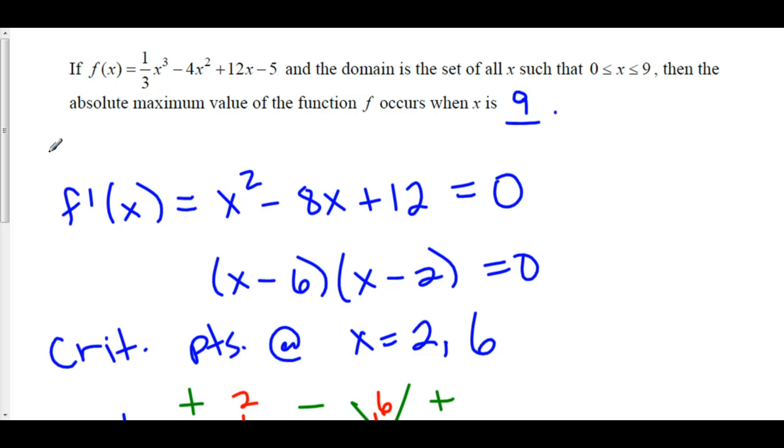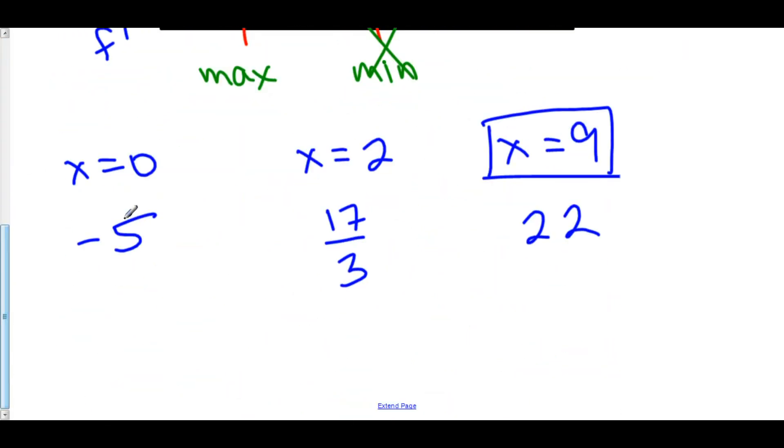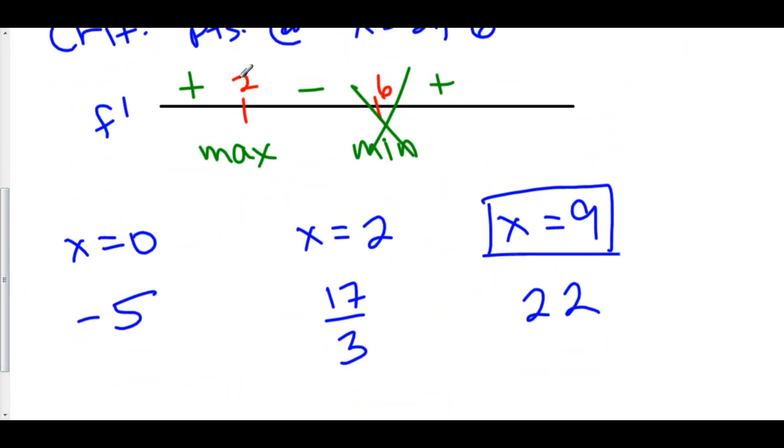Always check the endpoints whenever you are asked to find the absolute min or max on some interval. And you will always be given an interval to look. So always check both the lower endpoints as well as the upper endpoints, because your local max and your local min might not be global maxes and mins.